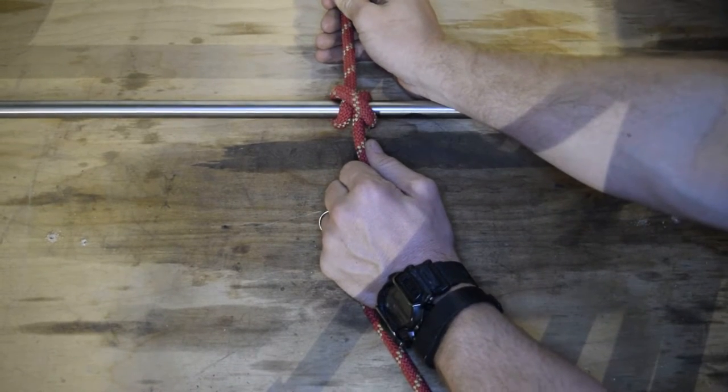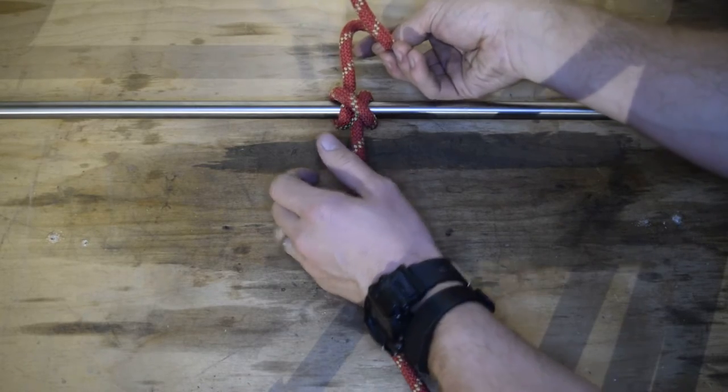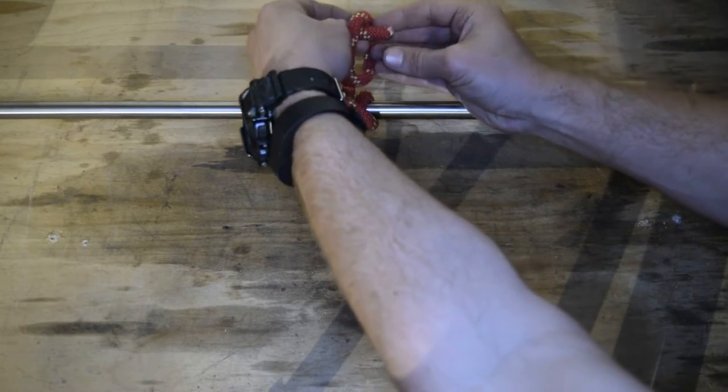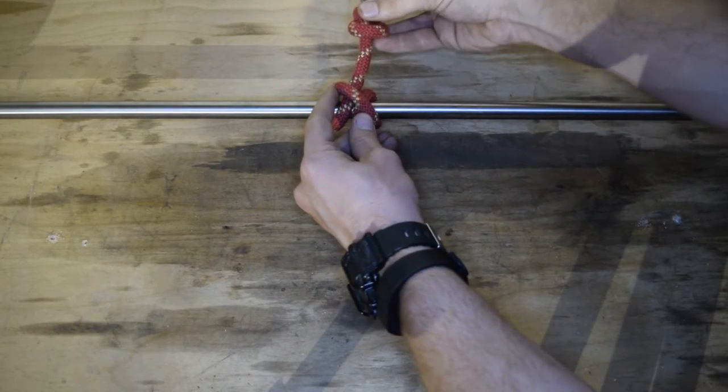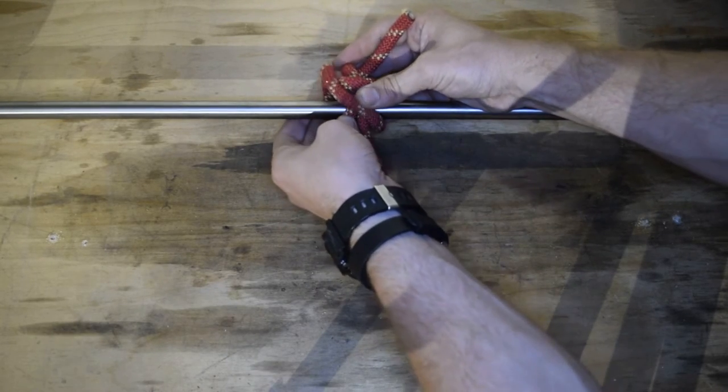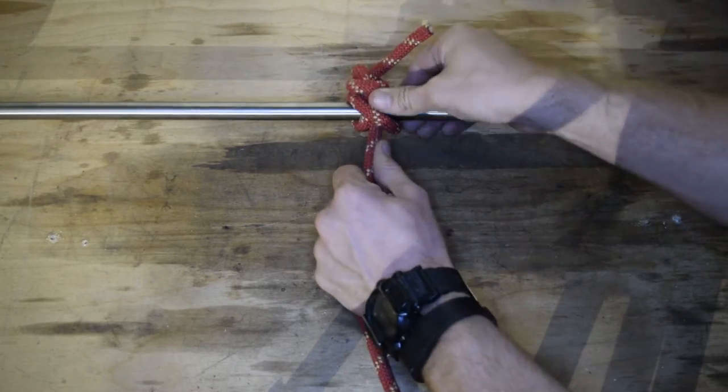Now that's a clove hitch. As far as LARO, we're required to do a safety with it. So you're going to take your tail, make an overhand, tighten it down, and then dress your knot. So you're just going to push the excess, remove the excess, and pull down.